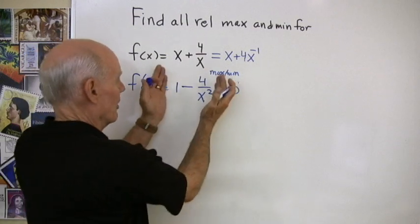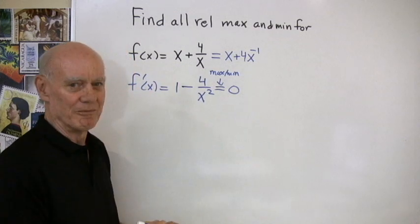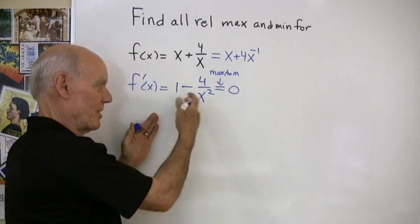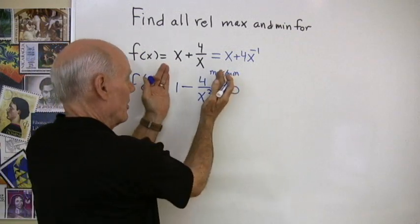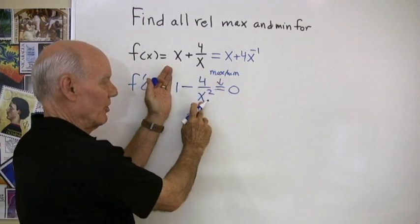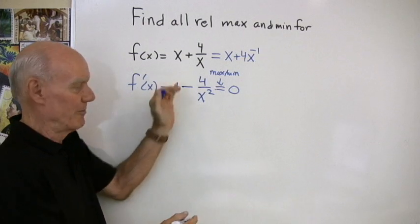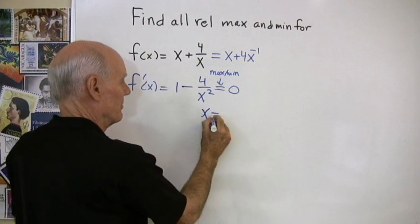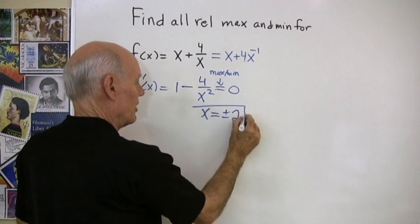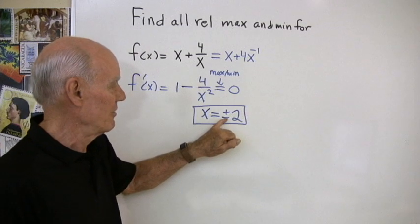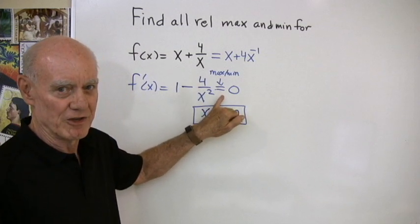How can this expression come out to be 0? We can go through a lot of work to solve this, multiply both sides by x squared, but really I just want to know when is this 0. The only way it can be 0 is if x squared is 4. That will only happen when x is plus or minus 2. So these are my critical values for this function. These are the values of x that give me 0 for the first derivative.